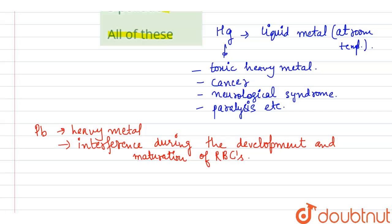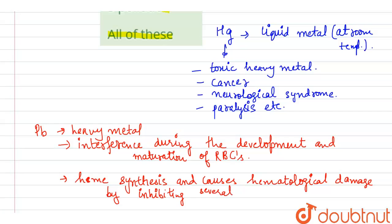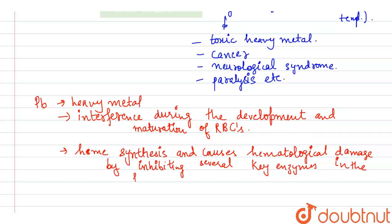Lead interferes with heme synthesis. Heme is the color providing pigment to the blood. Lead causes hematological damage by inhibiting several key enzymes in the heme synthesis process.